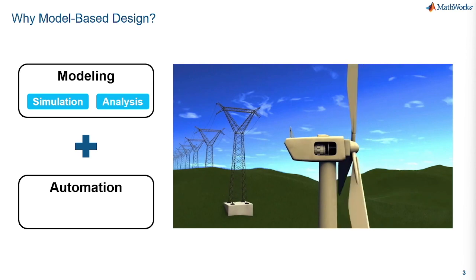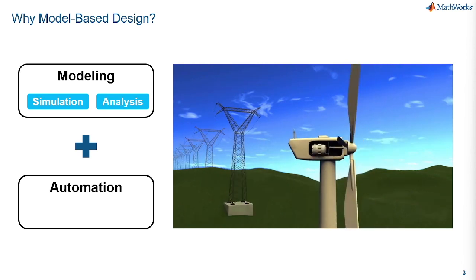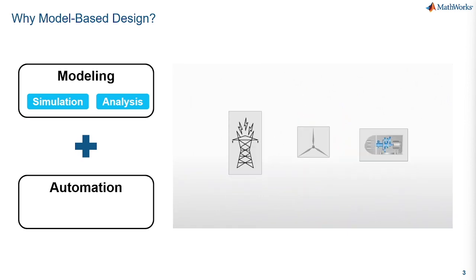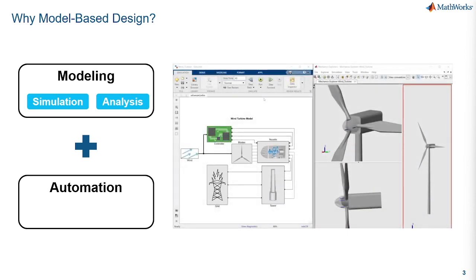There are two major components: modeling and automation. With Simulink you can model and simulate your systems to quickly try out new ideas and explore a wide design space.